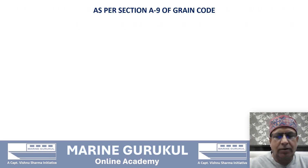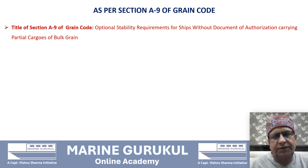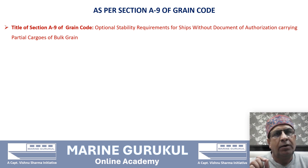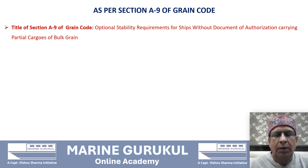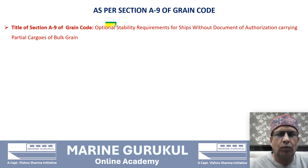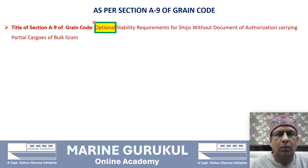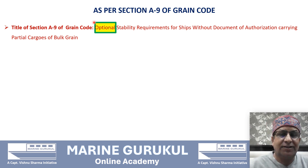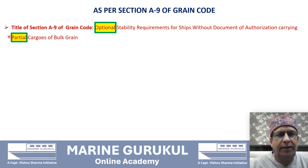Section A 9 of the Grain Code — please read the title very carefully. The title is: 'Optional Stability Requirements for Ships Without Document of Authorization Carrying Partial Cargoes of Bulk Grain.' Two words in this title are very important and sometimes overlooked. The first is 'optional' — it is an alternative criteria. The other option was what we just studied under Section A 3.5. It will apply to ships only if they are carrying or intend to carry partial cargoes of bulk grain, not a full cargo.